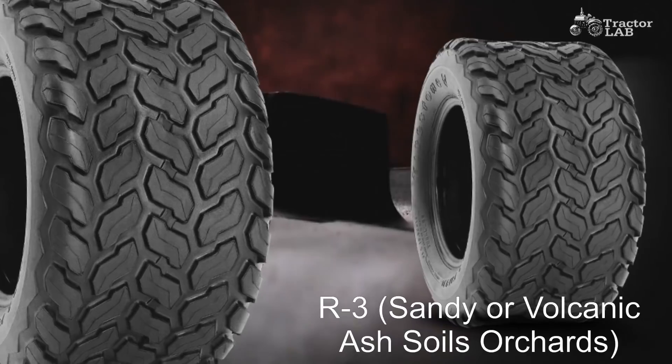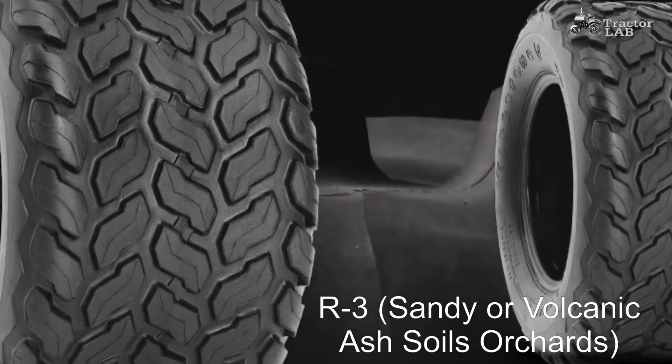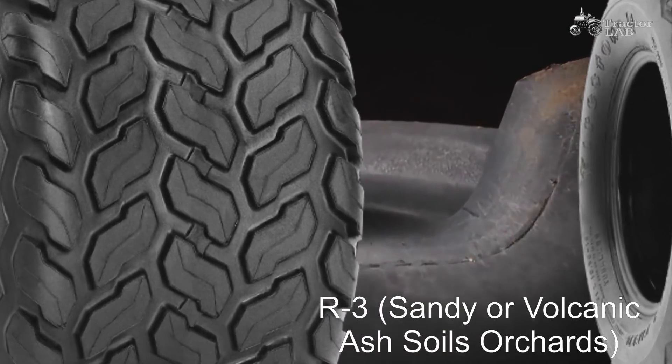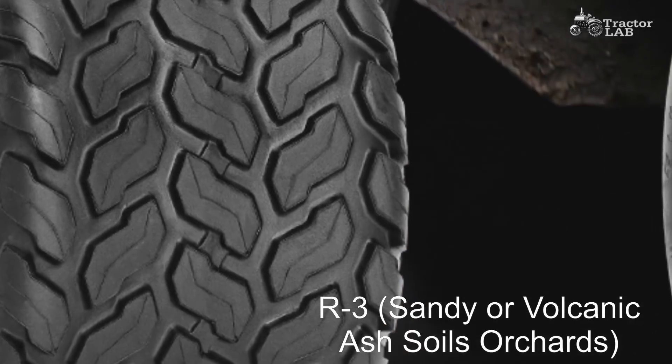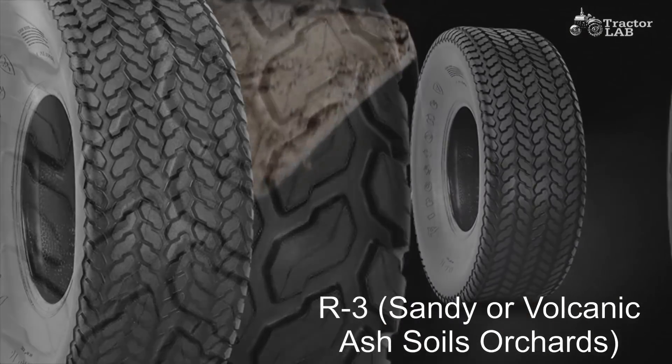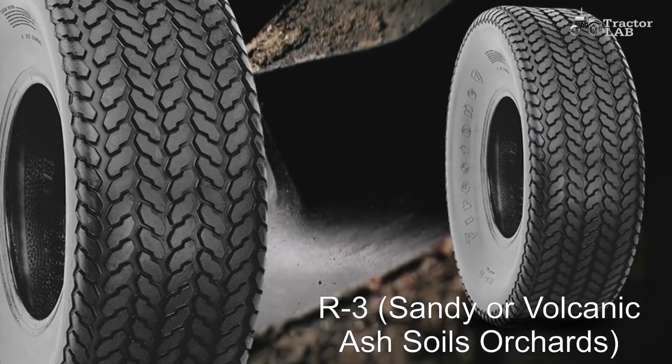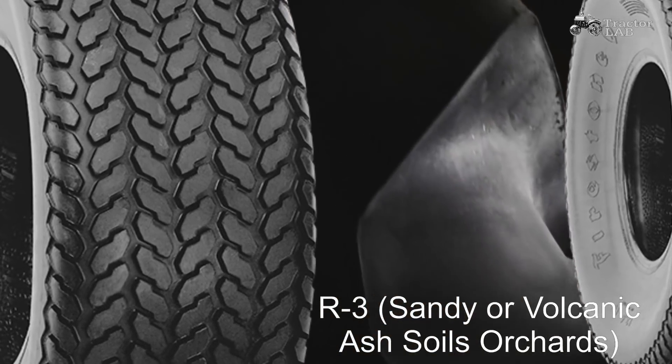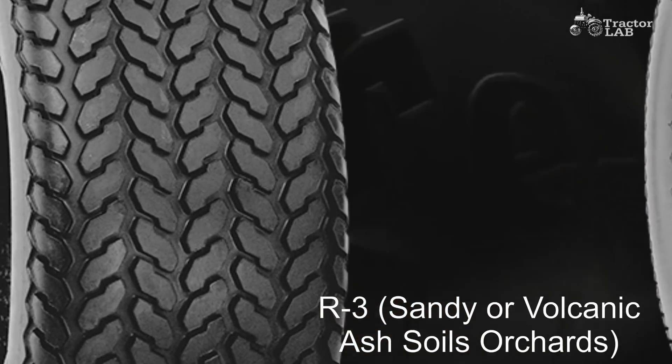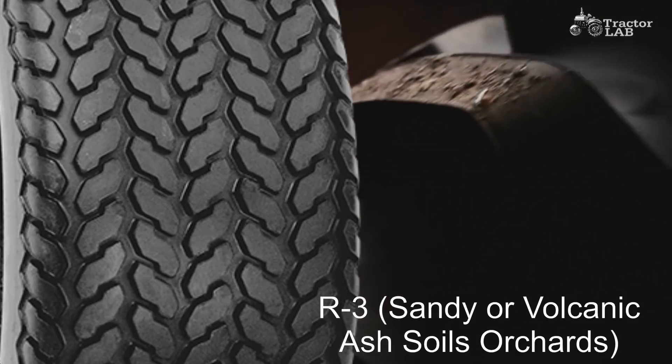R3 designs are used on turf or in sandy areas where the disturbance of an aggressive lug type tire is not wanted. R3 shallow, button style treads are not designed for hard pulling, but may give surprisingly good traction on smooth, dry surfaces.